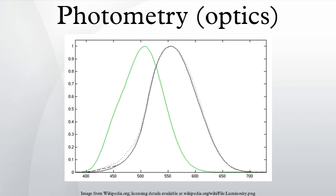In photometric quantities, every wavelength is weighted according to how sensitive the human eye is to it, while radiometric quantities use unweighted absolute power. For example, the eye responds much more strongly to green light than red, so a green source will have greater luminous flux than a red source with the same radiant flux would.